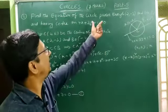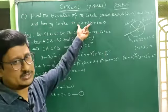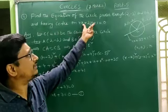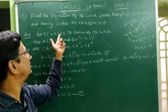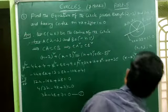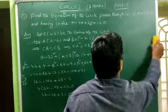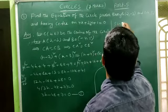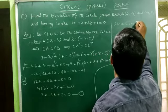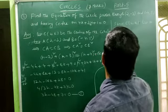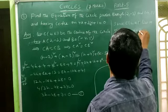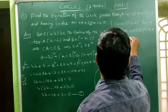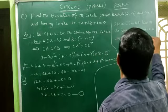We know that the center lies on the line. The center is C(h, k). Since C(h, k) lies on the line 4x + 3y + 1 = 0, we substitute h in place of x and k in place of y. This gives 4h + 3k + 1 = 0. Call this equation number 2.